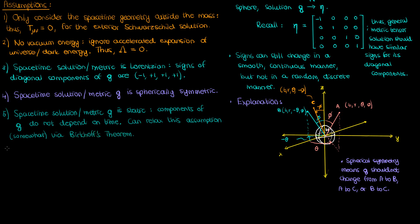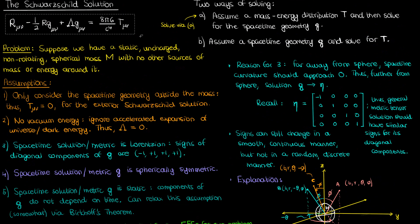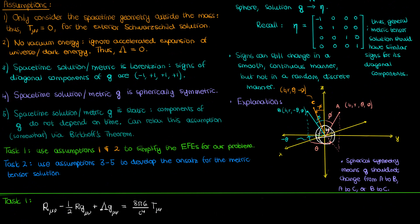We now have two tasks remaining for deriving the Schwarzschild metric. The first task is to use assumptions 1 and 2 to simplify the Einstein field equations for our specific problem, and the second task is to use assumptions 3 through 5 to develop a hypothesized metric tensor solution — an ansatz — that will be the general form of the solution for the Schwarzschild problem. Let's start with task 1 by writing out our Einstein field equations. By assumption 1, the stress-energy tensor on the right is zero, and by assumption 2, the cosmological constant term is zero, leaving us with a simplified equation I'll call equation 1.